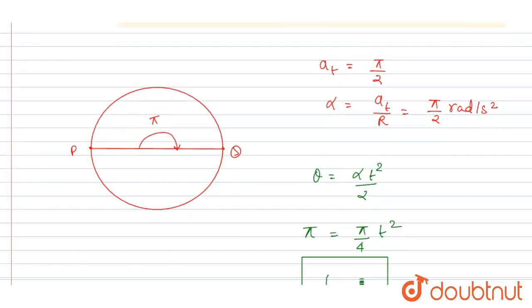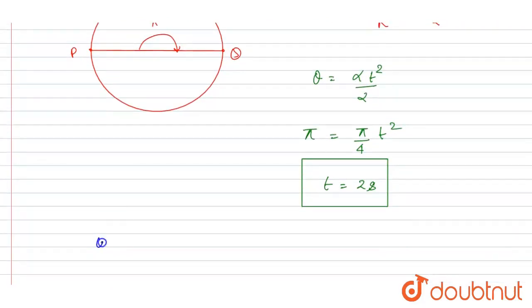So let us calculate angular velocity first. So I will write at Q, the angular velocity will be alpha times t. Alpha is pi by two and t is two, so it will be pi radian per second.